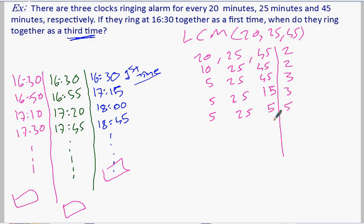So now by 5, 1, 1 and 5. By 5 again, 1, 1 and 1. So we finished. 2 times 5, 2 times 5, 10. Keep in mind, 2 times 5, 10. So 3 times 3, 9. 9 times 10, 9 times 10, 900. So after 900 means they will ring at the same time.